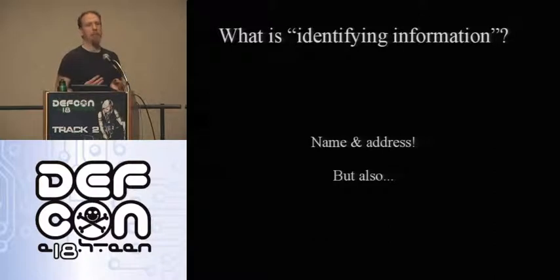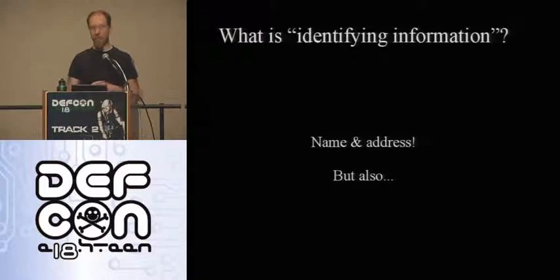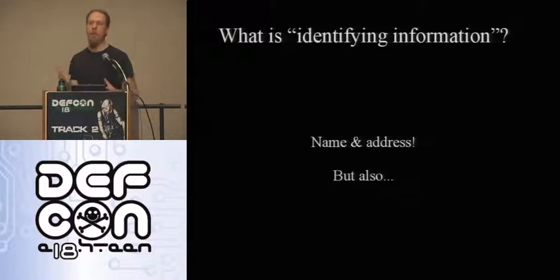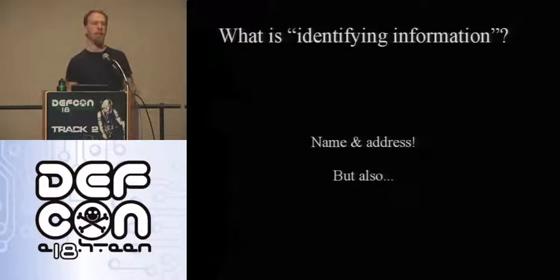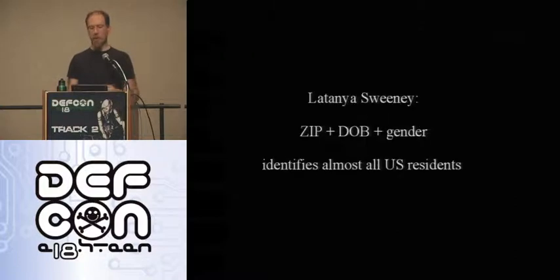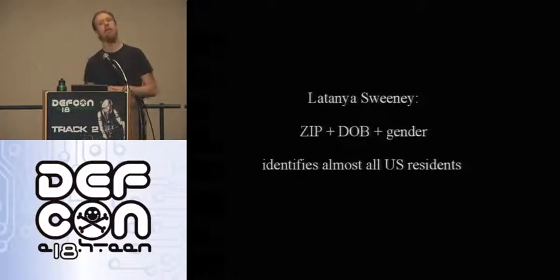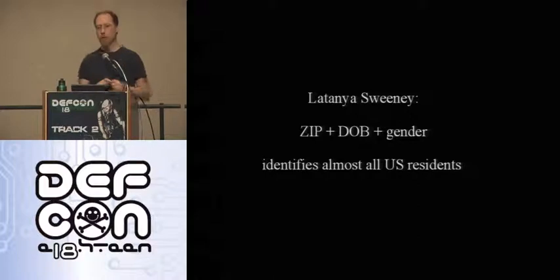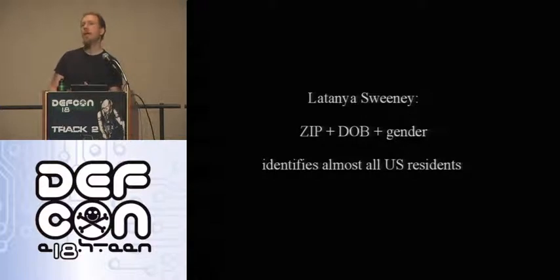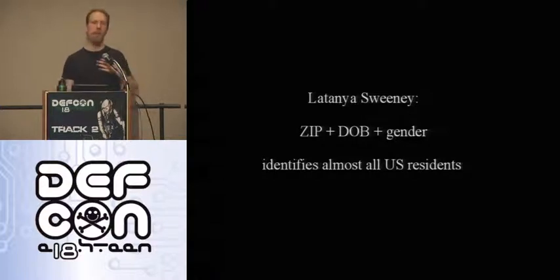Before we get to browsers, let's talk about identifying information. When we ask what kind of information identifies a person, we have some standard answers, like if I know their name and address, I probably know who they are. But there are some more surprising examples. There's a paper by Latanya Sweeney from the 90s showing that someone's zip code, date of birth, and gender gives you about an 80% probability of uniquely identifying them.